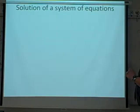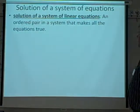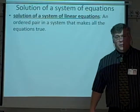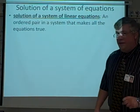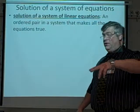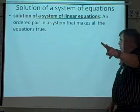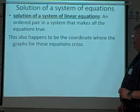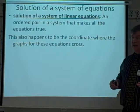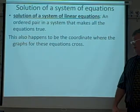Solution of a system of equations. The solution, as we said earlier, is an ordered pair in a system that makes all the equations true. A system of equations could be more than one equation. In fact, it has to be more than one. It could be two, three, four, five, but it has to be at least two. Two or more equations together. And the solution is the ordered pair that makes every equation in the system true. This also happens to be the coordinate where the graphs for these equations cross.